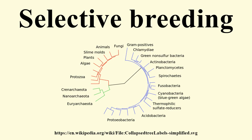Domesticated animals are known as breeds, normally bred by a professional breeder, while domesticated plants are known as varieties, cultigens, or cultivars. Two purebred animals of different breeds produce a crossbreed, and crossbred plants are called hybrids.